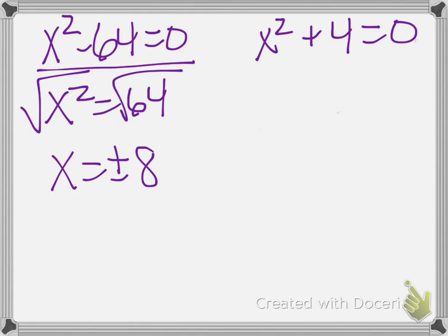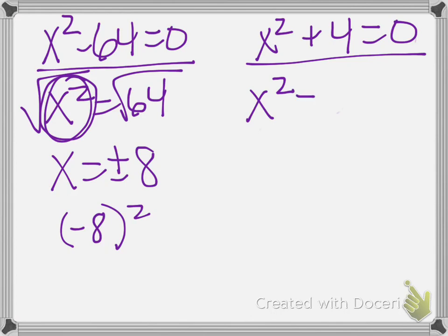Remember that plus or minus, it's not just 8, because negative 8 squared is also 64. So the plus or minus comes in when you're dealing with taking the square root of a variable squared. Now this x squared plus 4 equals 0. We've recently talked about how that's not factorable. So let's try doing that the same way.